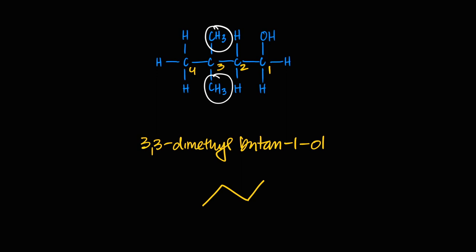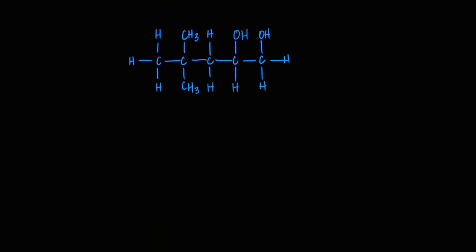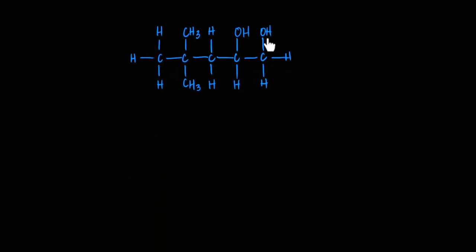The skeletal formula would be: four carbons, carbon one is the alcohol end, and carbon three gets two methyl groups — one in each direction. That's the skeletal for 3,3-dimethylbutan-1-ol.